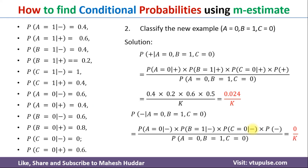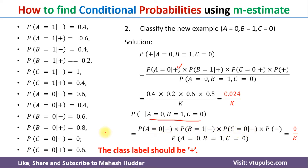Similarly, we need to do the other calculation — that is, probability of minus given these evidences. Wherever plus appears, we write minus. Once you solve this equation, you will get zero, because the probability of C equals zero given negative is equal to zero. Multiplying by that value makes the whole thing zero — so we get zero by K. Comparing the two values, 0.024 is more than zero, so the new example is classified as positive.